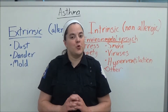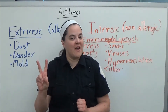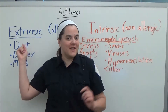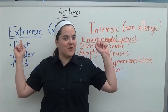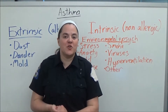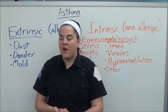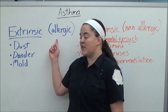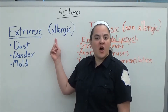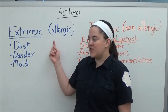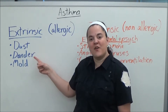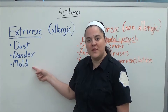Asthma is divided into two different categories: extrinsic and intrinsic. Extrinsic asthma, also known as allergic asthma, is caused by allergens such as dust, dander, and mold.